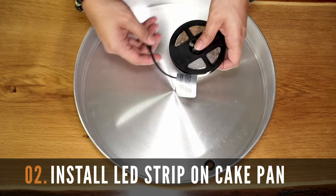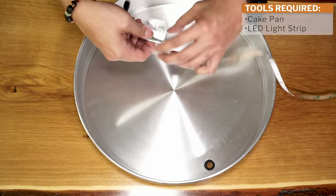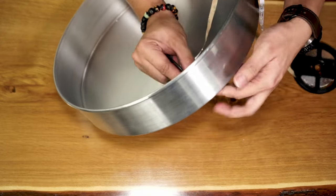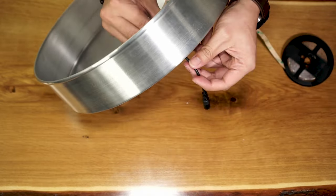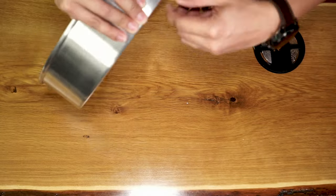After drilling the hole and installing the rubber grommet, let's now install the LED strip around the cake pan. Start by fishing the power adapter wire through the new hole you just made. This will allow for a cleaner look and avoid wires dangling from the front of the cake pan.